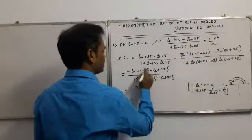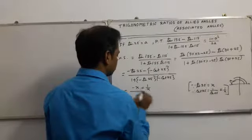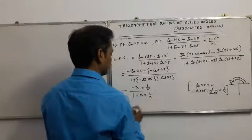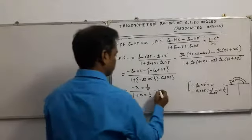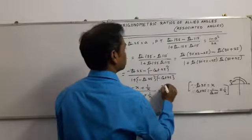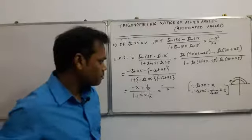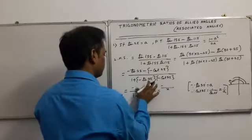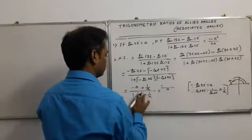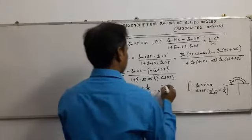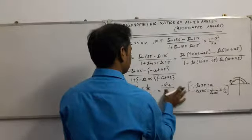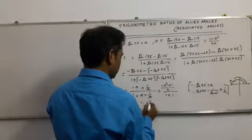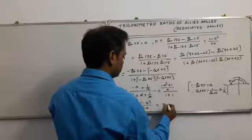Substituting: the numerator becomes minus a minus (1/a), and the denominator becomes 1 plus (minus a)(minus 1/a), giving 1 + 1 = 2. So the expression simplifies to (−a − 1/a) / 2 = (−a² − 1) / (2a), which equals (1 − a²) / 2a. This is the required RHS, hence proved.